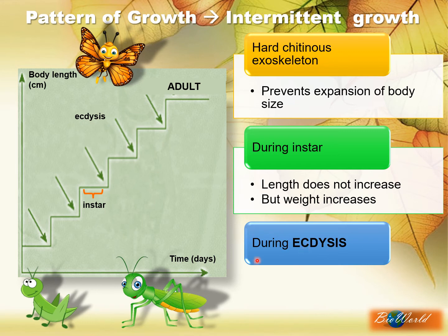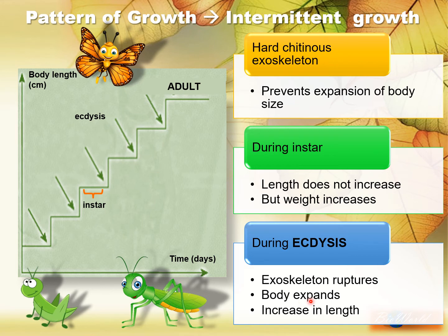During ecdysis, the insect actually ruptures its old exoskeleton and becomes free temporarily. That gives it enough time to expand its body and increase its length. So that is why on the same day we have two different body lengths. This process of ecdysis is regulated by hormones. Let's look at how the hormones enable ecdysis of the nymph.